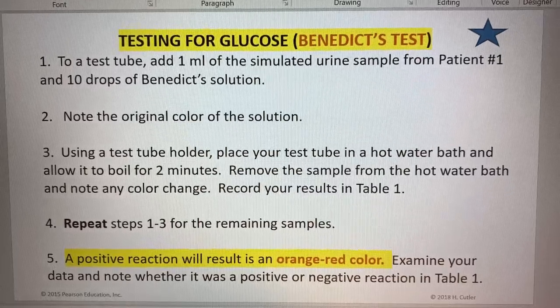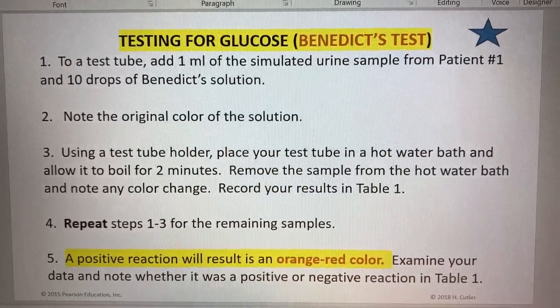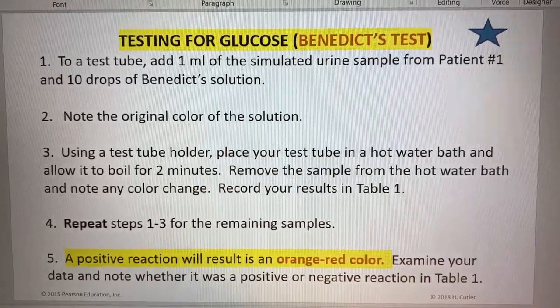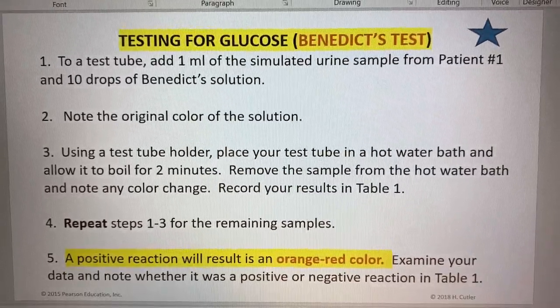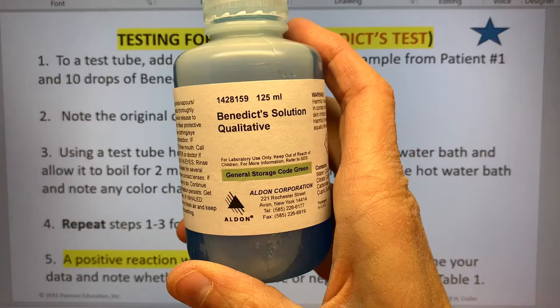Let's look for the presence of glucose or sugar in the urine. We'll know that's not normal, that's pathological. To test for glucose, we're going to use Benedict's solution.